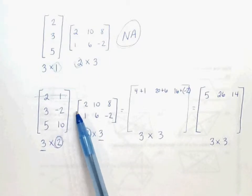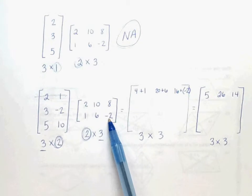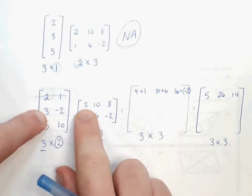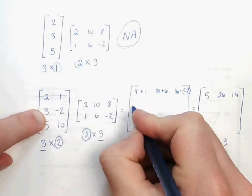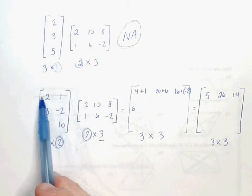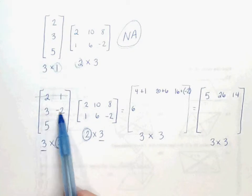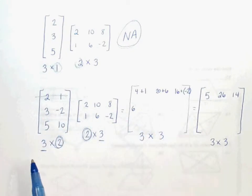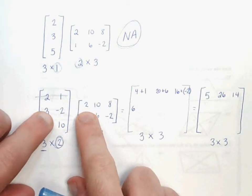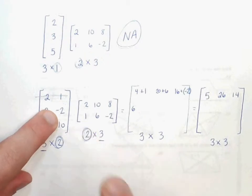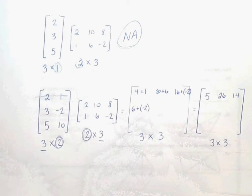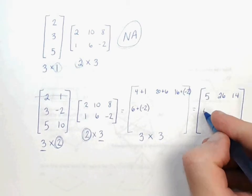Now we're going to do the same thing, and we're going to use the second row with each column. We're going to start with 3 and 2. 3 times 2 is 6. Notice that now that we're finished with our first row, our answers are going to go on the second row now. So 3 times 2 is 6, slide over and down. Negative 2 times 1 would be negative 2, so plus negative 2.